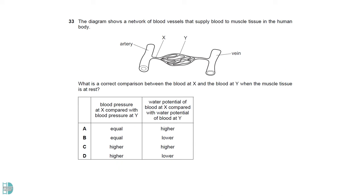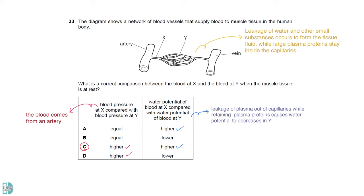X has a higher blood pressure as the blood comes from an artery. In the capillaries, water together with many substances of small sizes leak out to form the tissue fluid, while large plasma proteins stay inside the capillaries. So the water potential would decrease in Y.